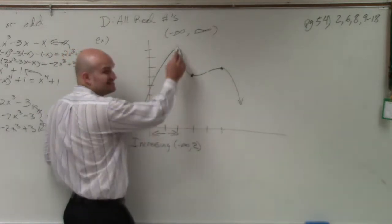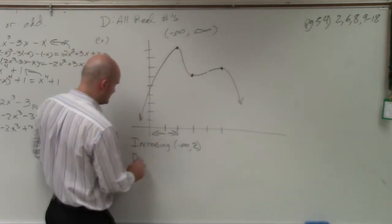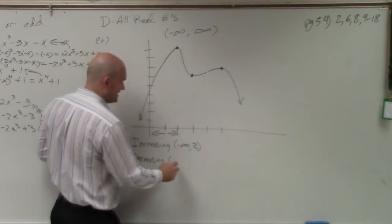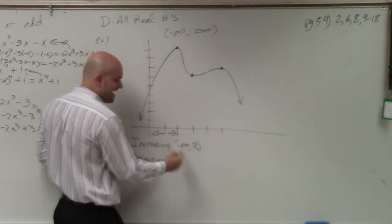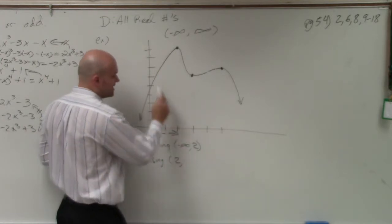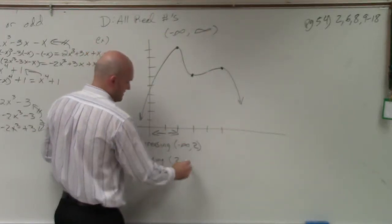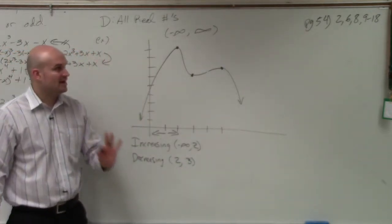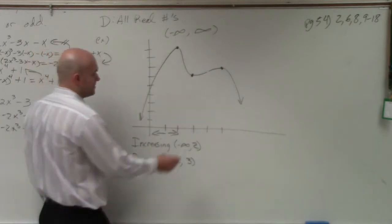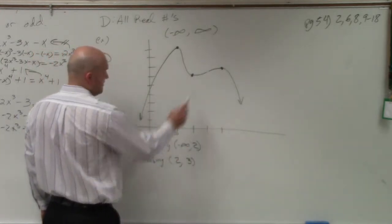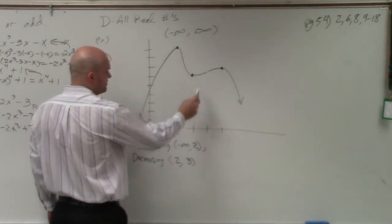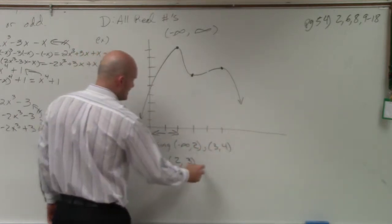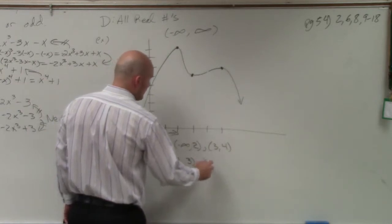Then it starts to decrease. It's decreasing from x equals 2 to how far over? 3. So it's decreasing from 2 to 3. And then it's increasing back again from 3 to 4. And then it's decreasing again from 4 to infinity.